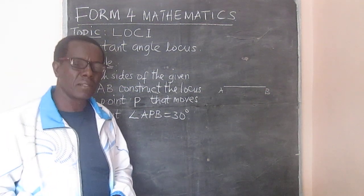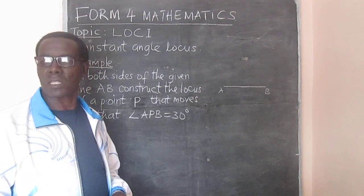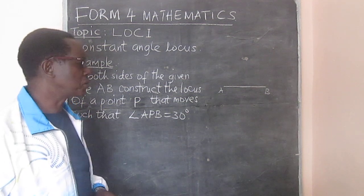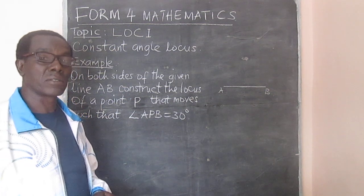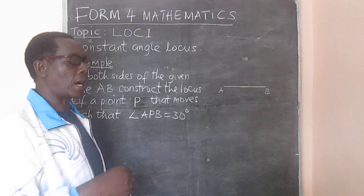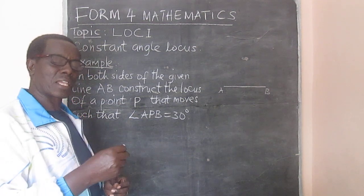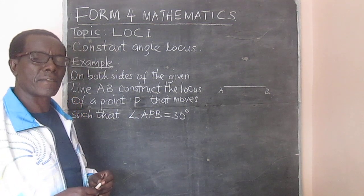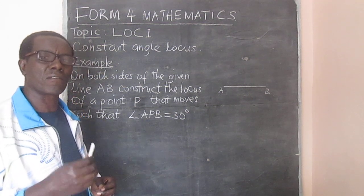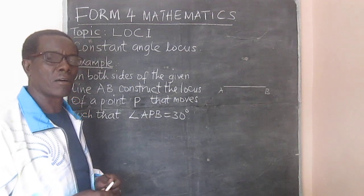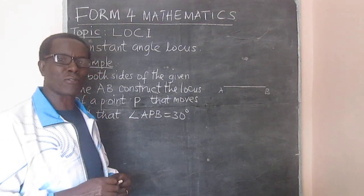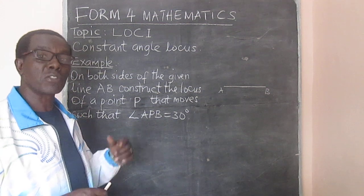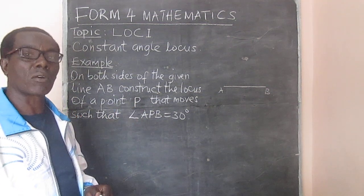This topic is actually an application of the circle geometry that was done in form 2. In form 2 we looked at the angle subtended by a chord on the circumference, and we also looked at the angle subtended by a chord at the center. We found that the angle at the center is twice, or two times, the size of the angle subtended at the circumference.